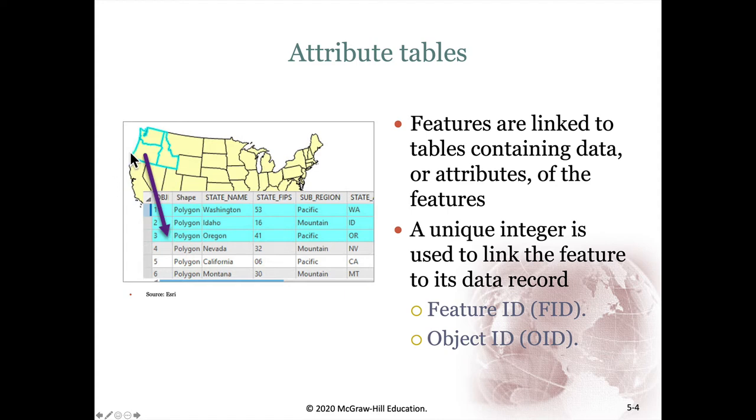For each of these features that we see on the map comprised of x and y coordinates, we have one row in an attribute table associated with each feature. Features are linked to an attribute table which contains all sorts of different information stored in various columns.